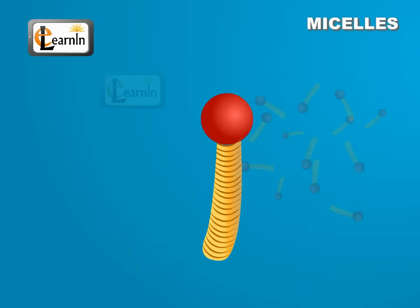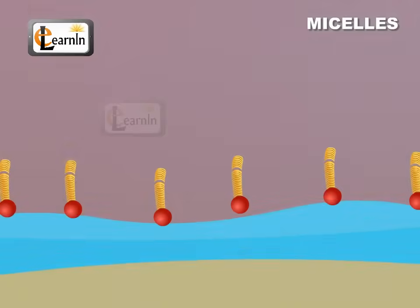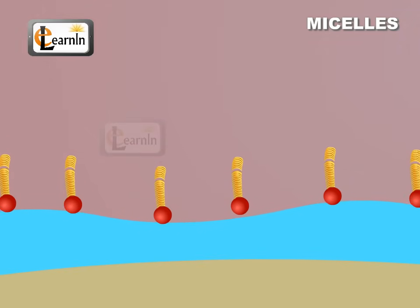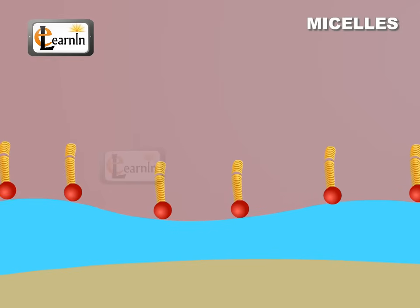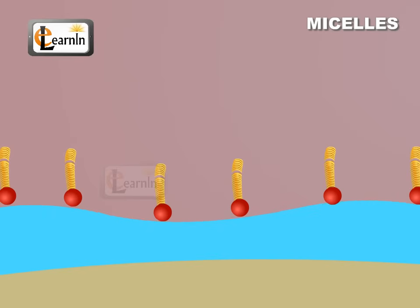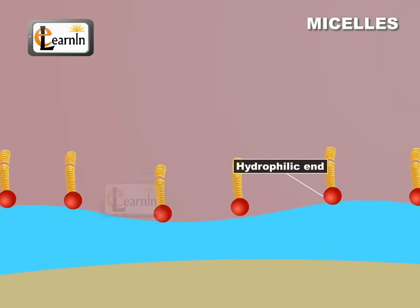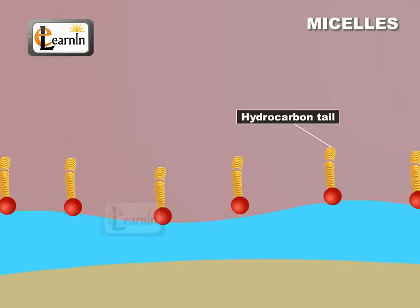The other end is hydrophobic, that is, it dissolves in hydrocarbons and doesn't dissolve in water. Since the hydrophobic tail of the soap molecules will not be soluble in water, the soap molecules will align along the surface of water with the hydrophilic end in water and the hydrocarbon tail protruding out of water. Inside water, the soap molecules are oriented such that the hydrocarbon portion is out of the water.